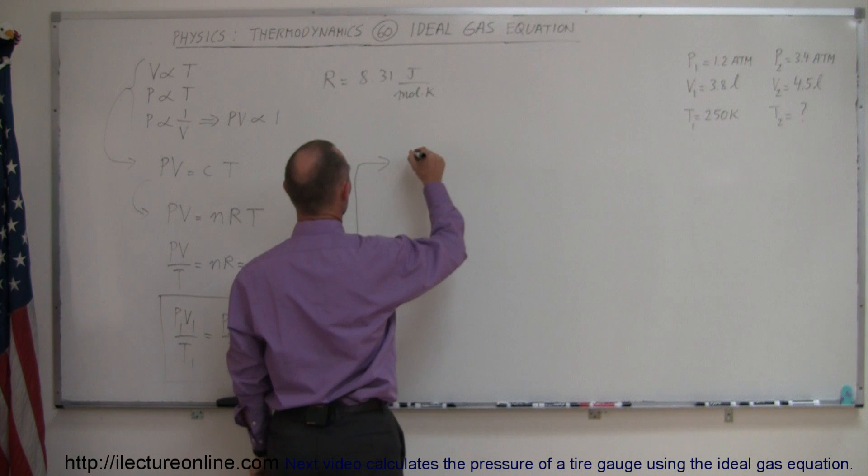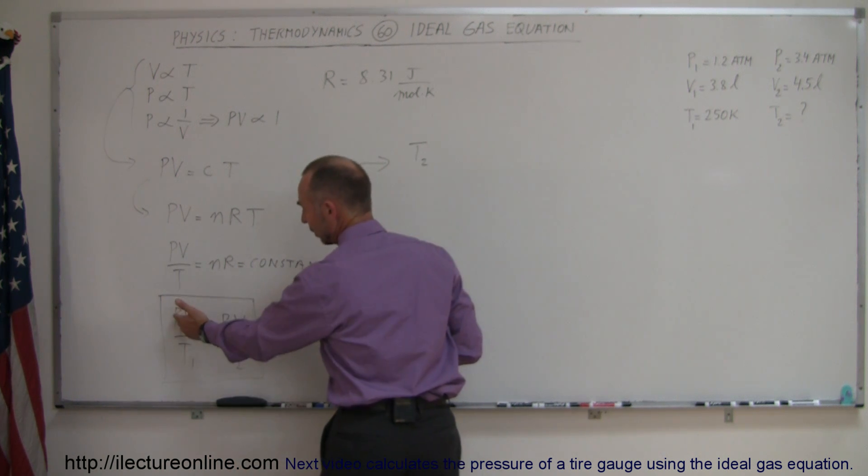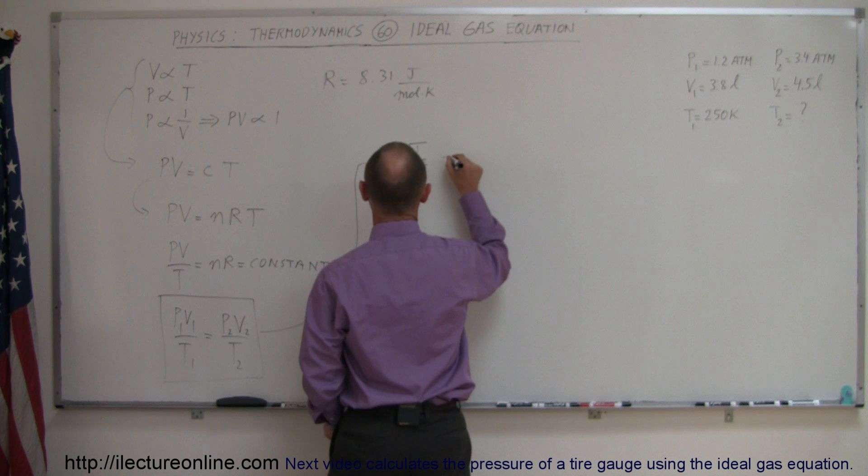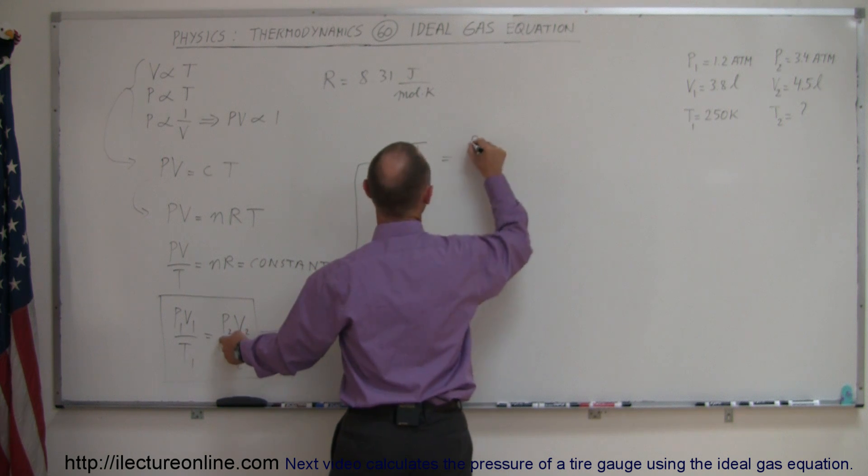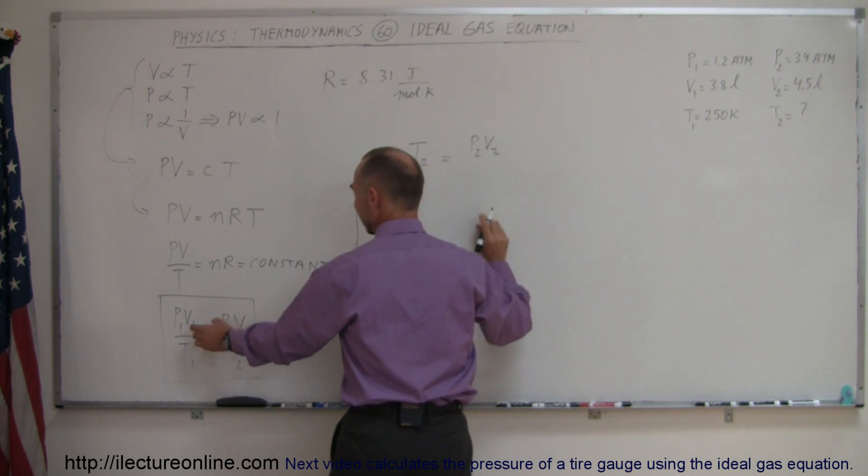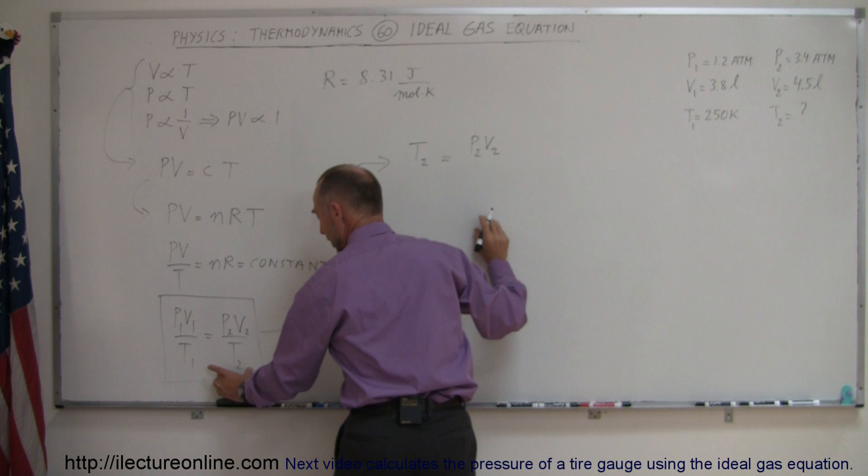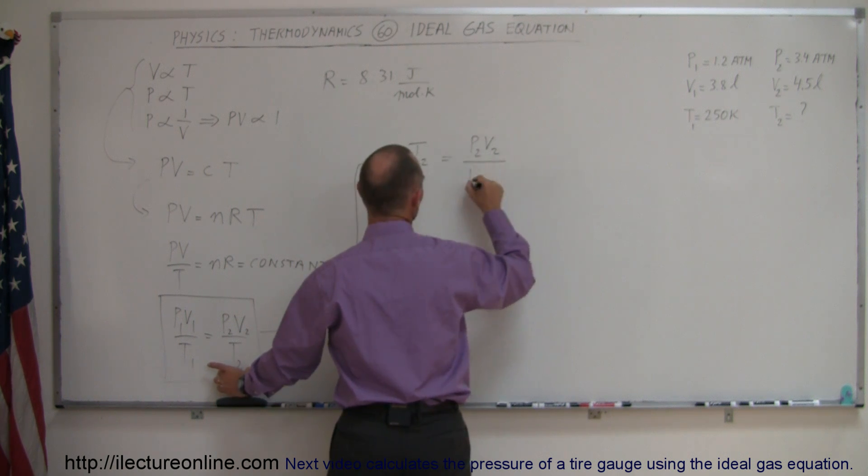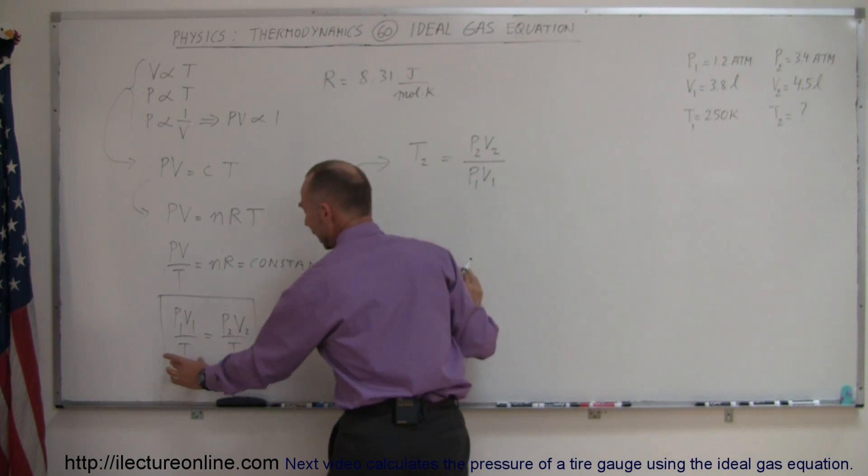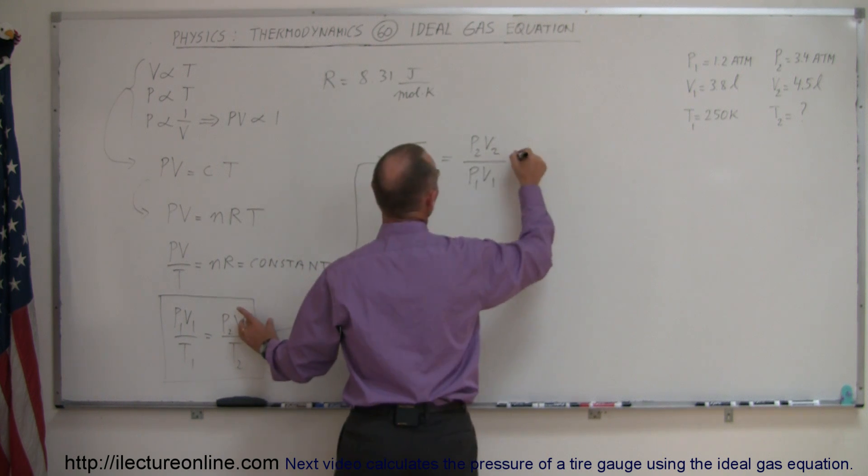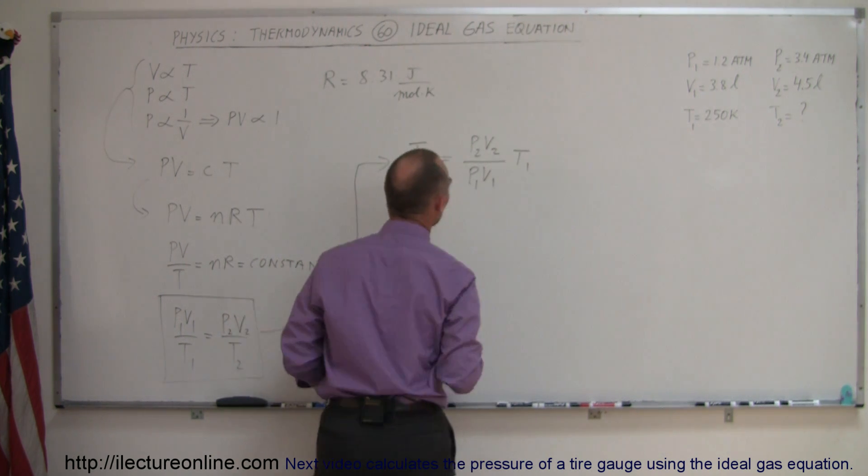So this equation then becomes T2, by moving the T2 over to the top left, is equal to, we still have P2V2 on the right. We're going to move P1V1 down here to the denominator, so we write this P1V1, and this T1 will then come across here and go to the numerator T1.